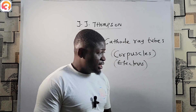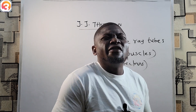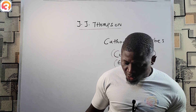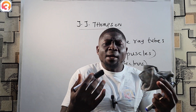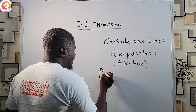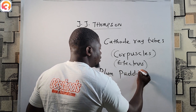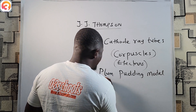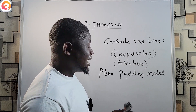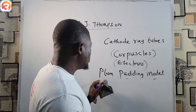So the discovery of electrons formed evidence for the divisibility of an atom. JJ Thompson's atomic structure is widely regarded as the plum pudding model. You have to take note of this for WAEC and JAMB — it is very important. JJ Thompson's model of the atom is called the plum pudding model.